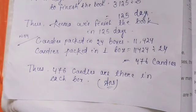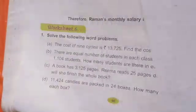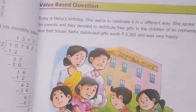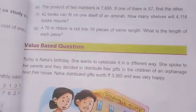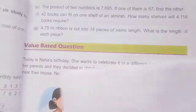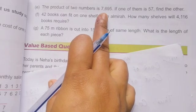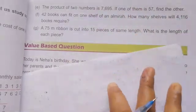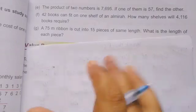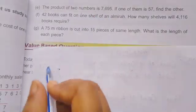Now we solve problem E. The product of two numbers is 7,695. If one of them is 57, find the other.